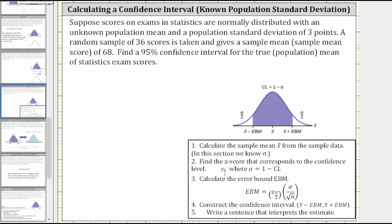Let's first record the given information. The population standard deviation is three, and therefore sigma equals three. The sample size is 36, and therefore n equals 36. The sample mean is 68, and therefore x bar equals 68. And the confidence level is 95%, and therefore CL equals 0.95.